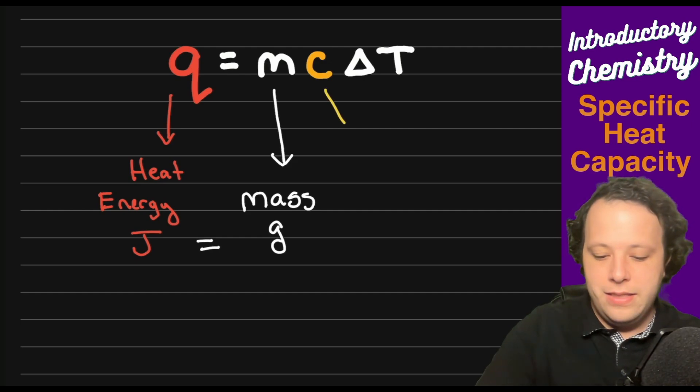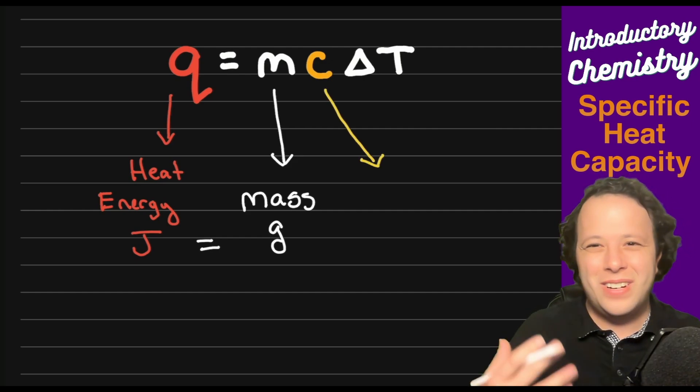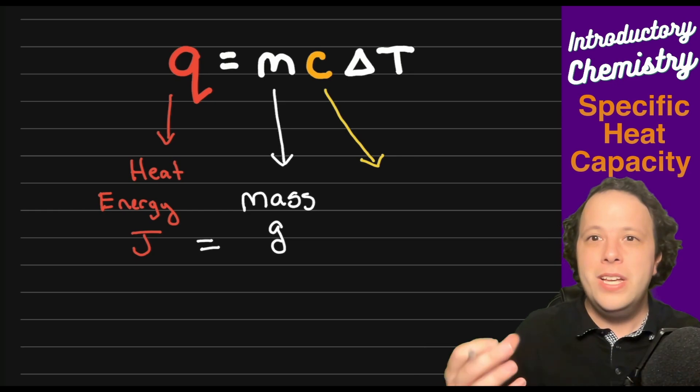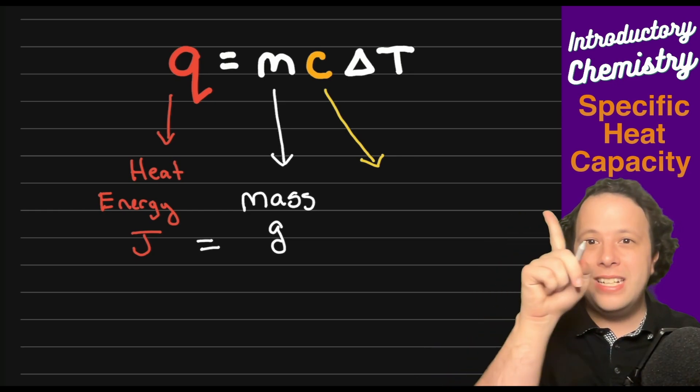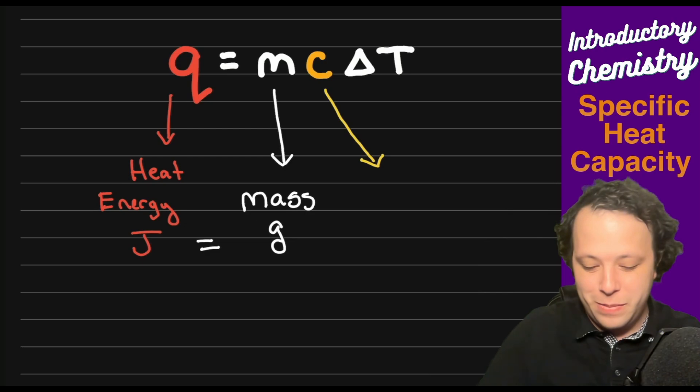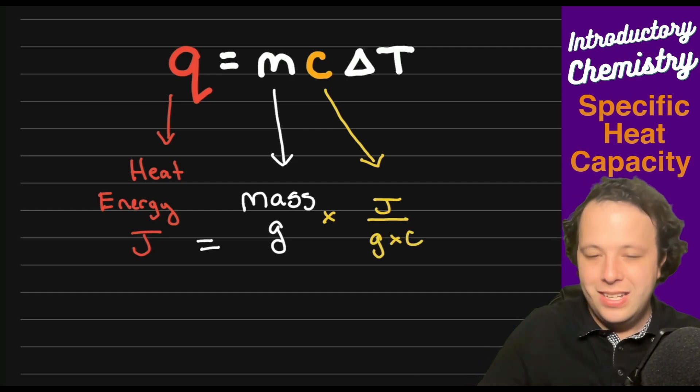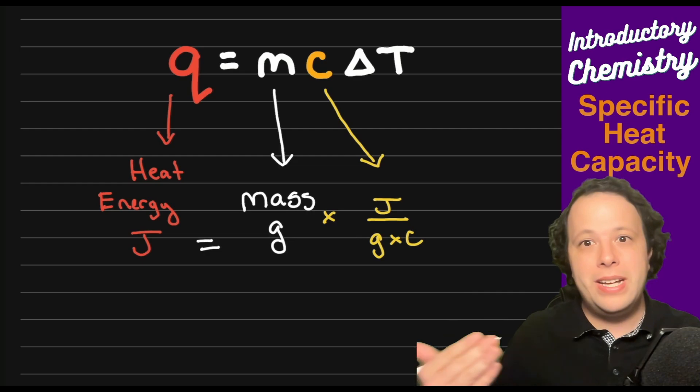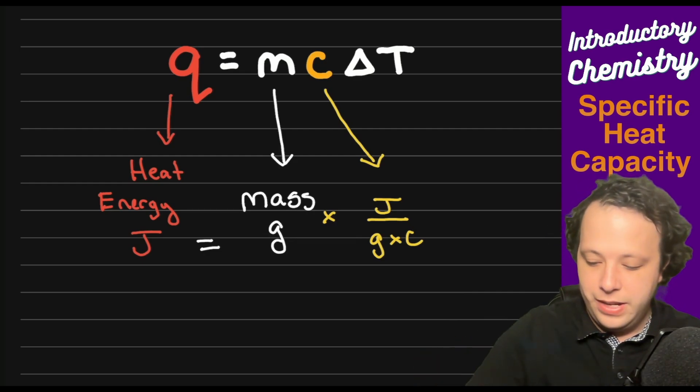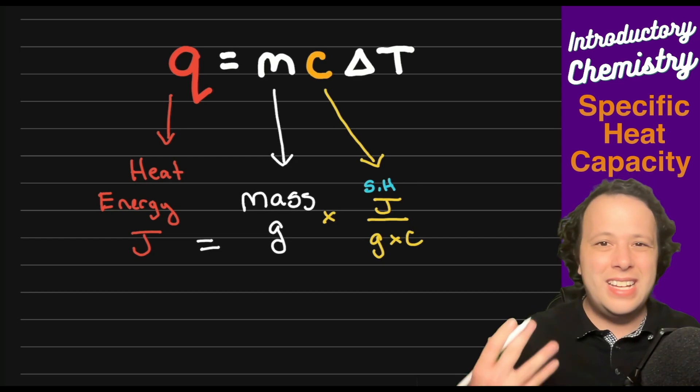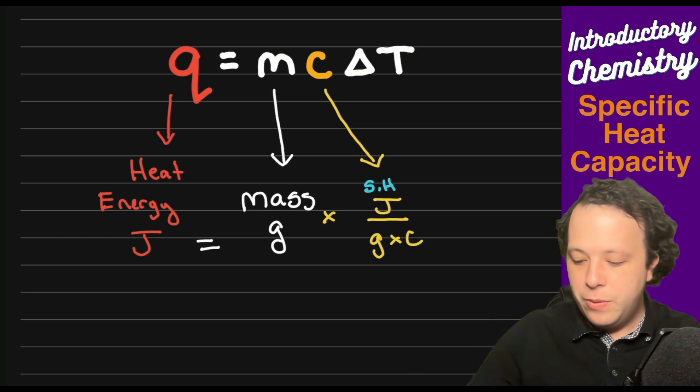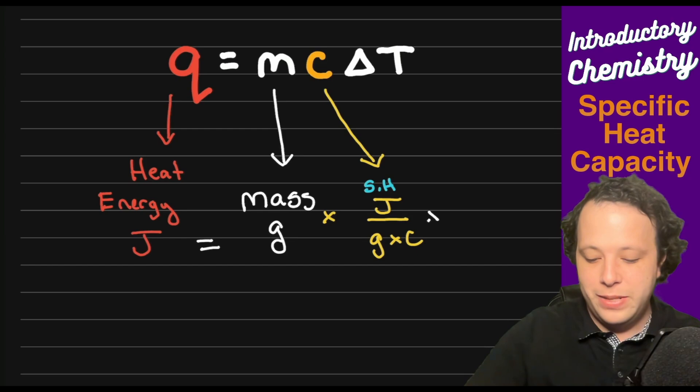C is our specific heat capacity. The units for that are joules over grams by Celsius. You can already see that the grams are going to cancel between mass and the specific heat. A lot of times when we talk about specific heat we'll abbreviate that as SH.